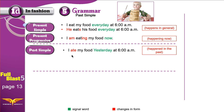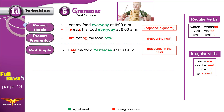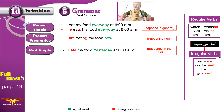I ate my food yesterday at 6 a.m. Notice: 'ate,' not 'eat.' In English, we have regular verbs and irregular verbs. 'Ate' is irregular — when a verb is irregular, we change it.